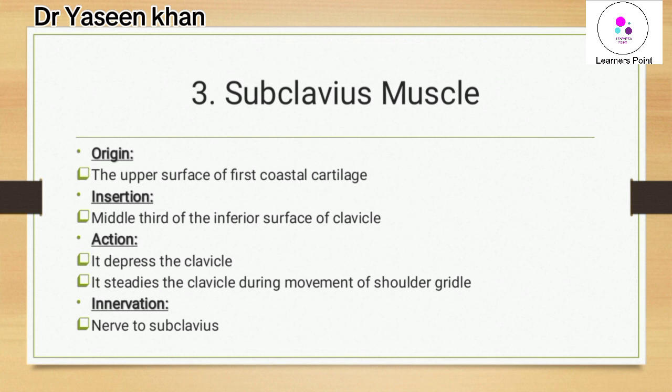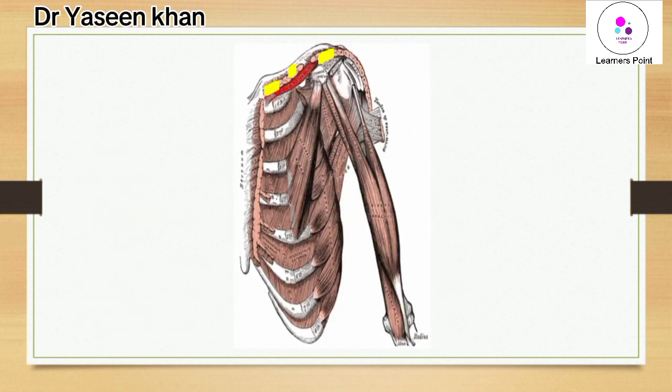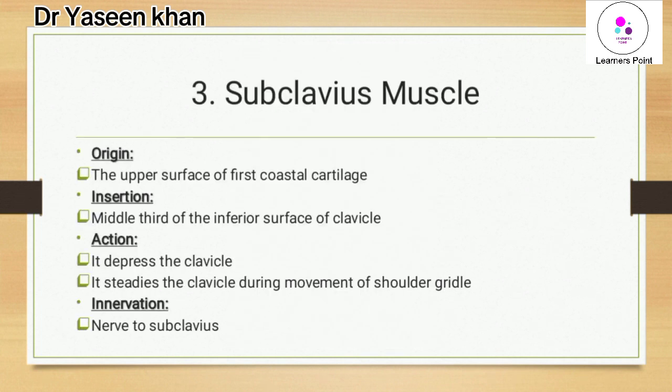Its action: it depresses the clavicle. Because the subclavius is below the clavicle, when it contracts it pulls the clavicle downward — this is depression of the clavicle. It also stabilizes the clavicle during movements of the shoulder girdle, such as abduction or raising the arm overhead.